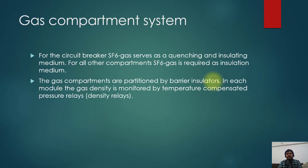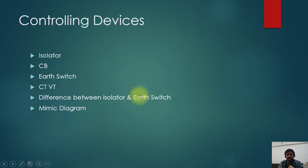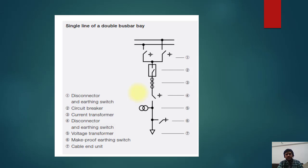The next topic is the gas compartment system. For the circuit breaker, SF6 gas serves as a quenching and insulating medium for all the compartments. SF6 gas is required as an insulation medium. The gas compartments are partitioned by barrier insulators in each module, and the gas density is monitored by temperature-compensated pressure gauges.